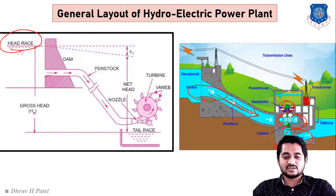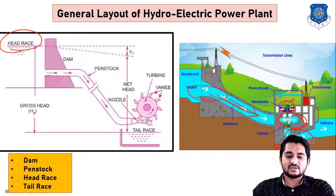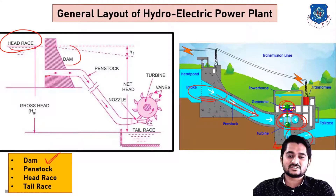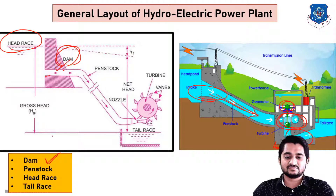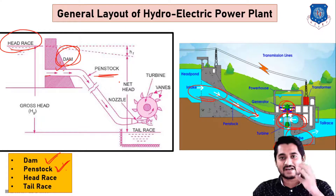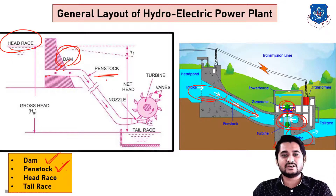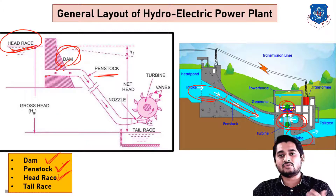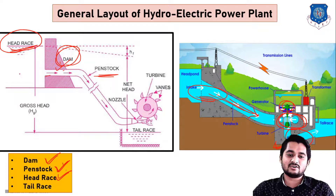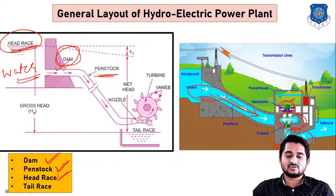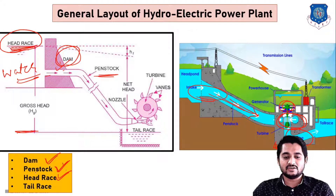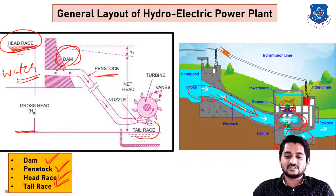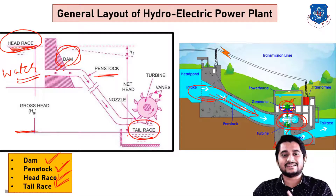Now let us understand the basic terminologies. A dam is a concrete side structure. The penstock is a large diameter pipe used for transferring water from the dam to the turbine. Head race is the level of water at the upstream side of the dam when no water is flowing, measured from the ground level. Tail race is the height of water after the turbine.